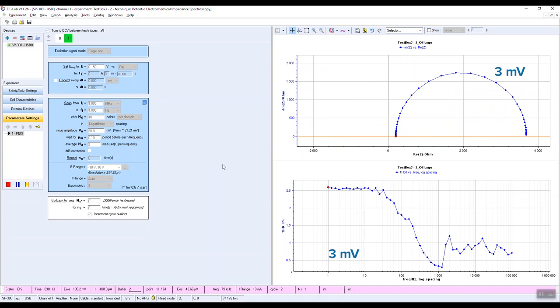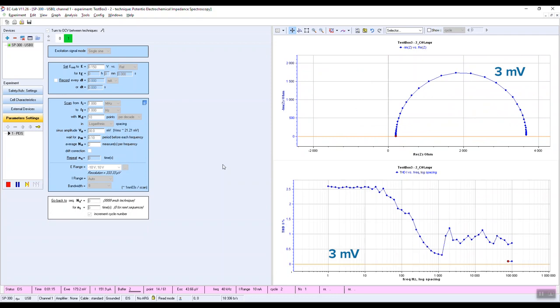The second 30 millivolts amplitude scan begins. At frequencies below 1 kilohertz, the Nyquist plot moves away from the previous one obtained at 3 millivolts amplitude.